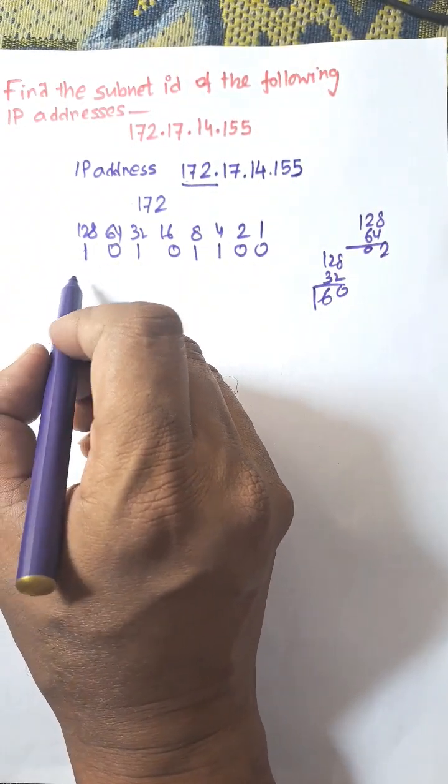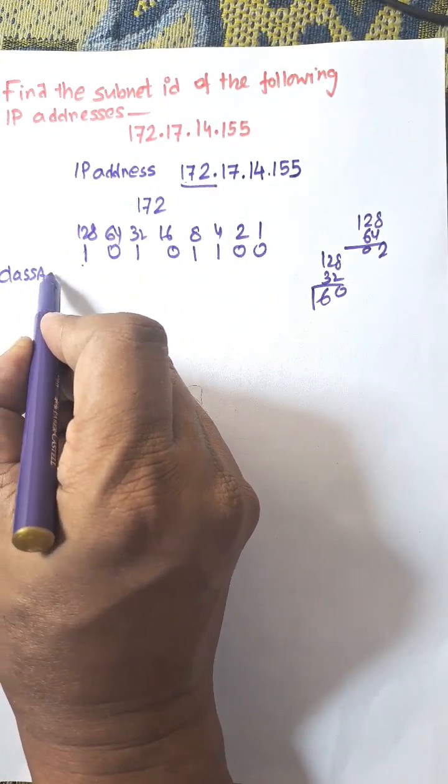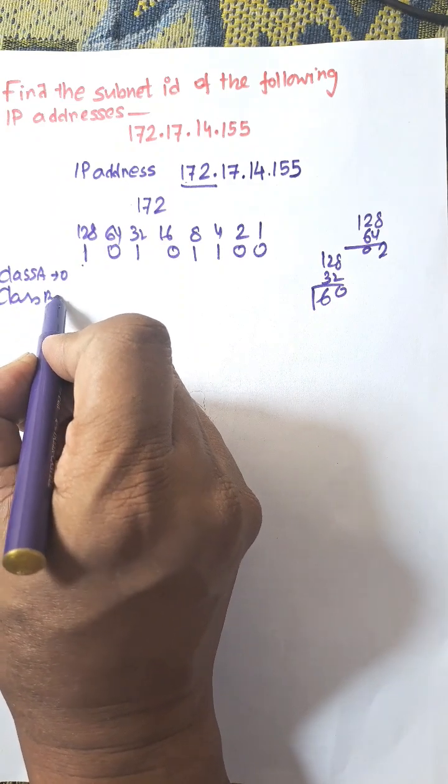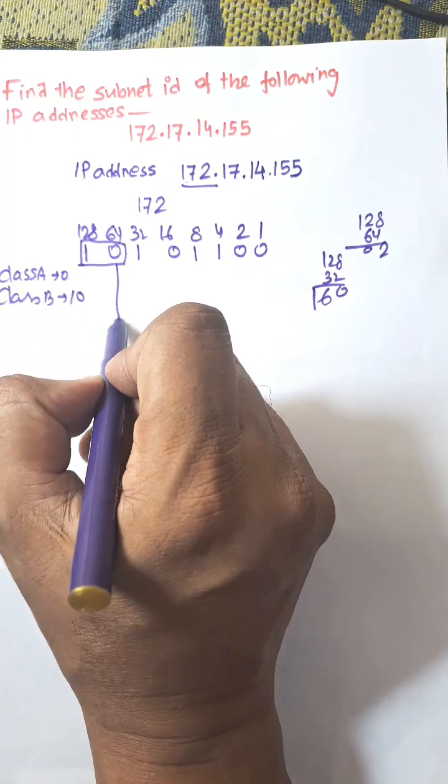According to IP address classes if the first bit is 0 then it is class A. For class B it is 10. Here the first two bit is 10 so it is known as class B.